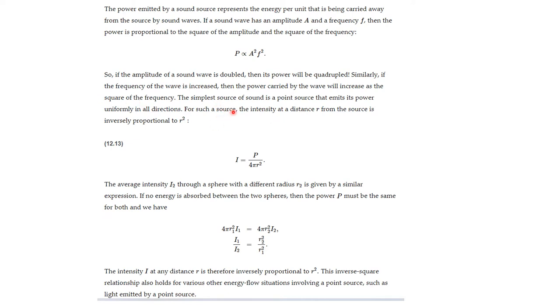The simplest source of sound is a point source that emits its power uniformly in all directions. It basically goes out in spherical waves. For such a source, the intensity at a distance r from the source is inversely proportional to r squared. That is, i is equal to p over 4 pi r squared, which is the surface area of the sphere.